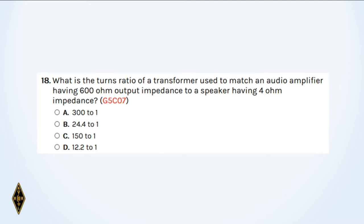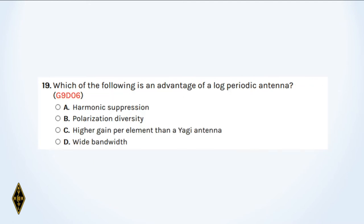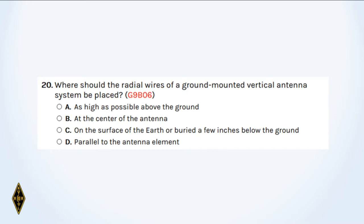And 19: Which of the following is an advantage of a log periodic antenna? And 20: Where should the radial wires of a ground-mounted vertical antenna system be placed?